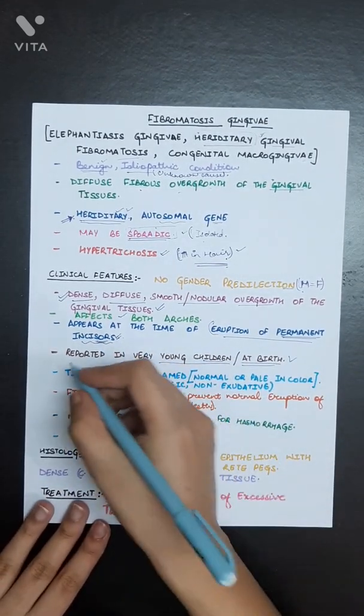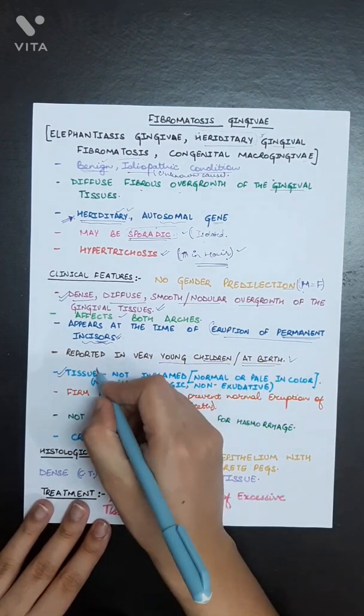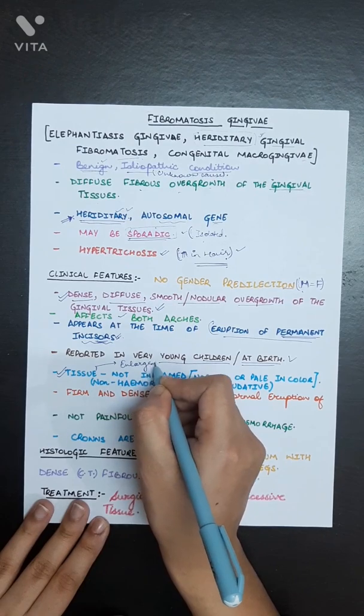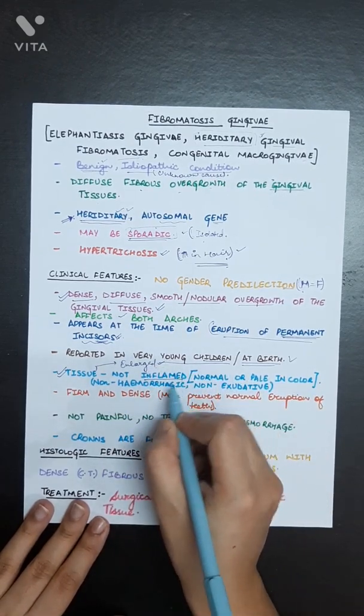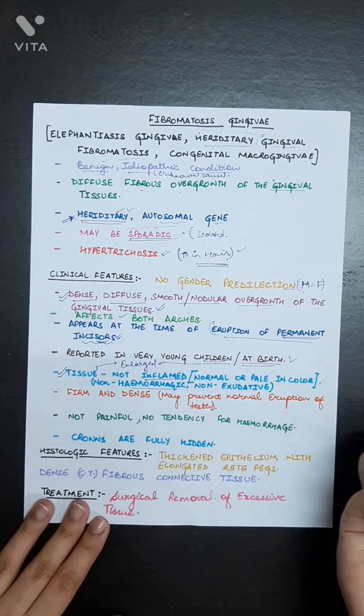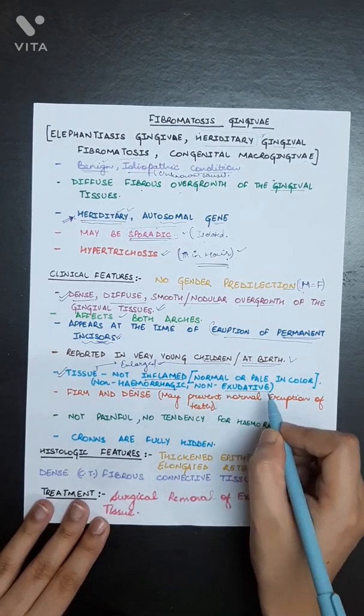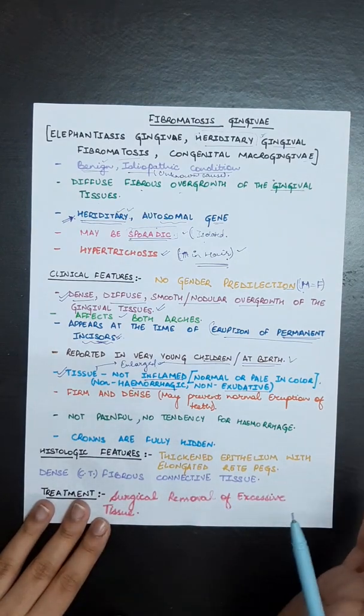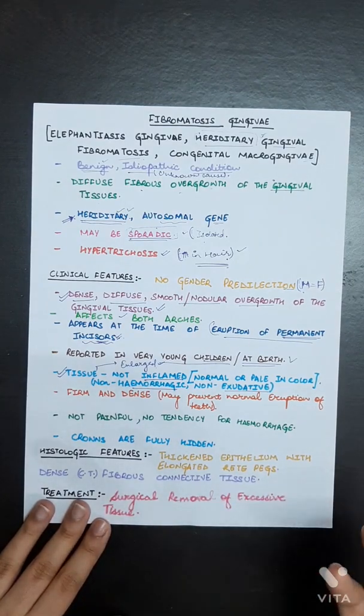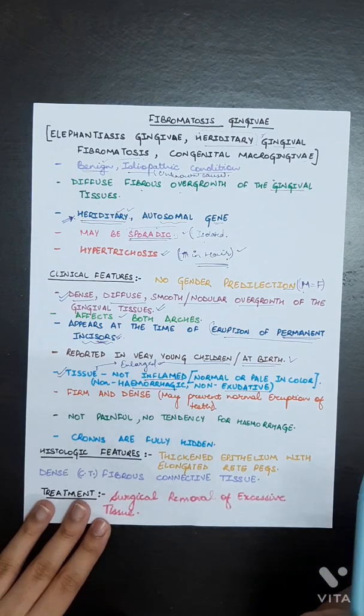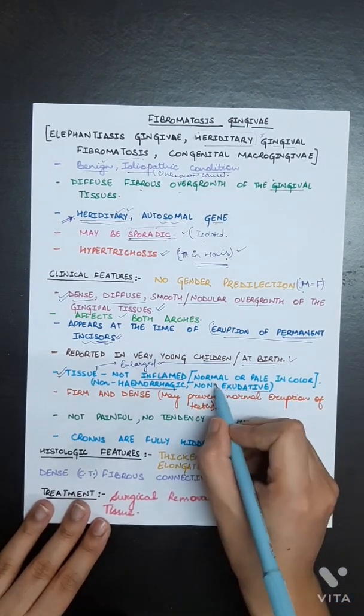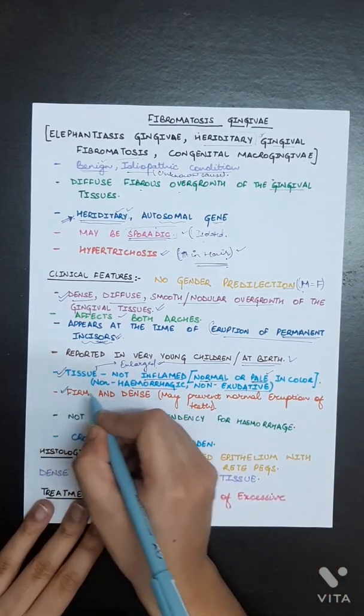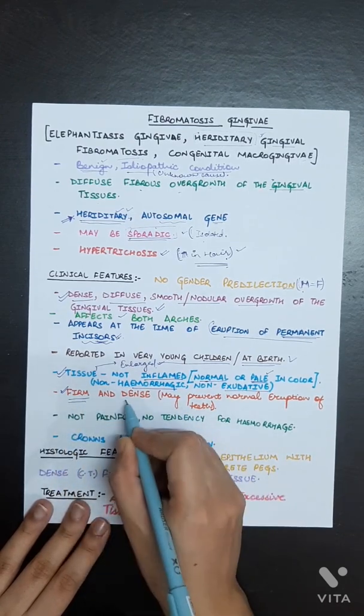The tissues are basically enlarged only. There will be no inflammation, no hemorrhage, no exudates or discharge. Only the gingiva is basically enlarged. There is overgrowth of that tissue. The color is normal or it can be pale. The tissue is basically firm and dense.